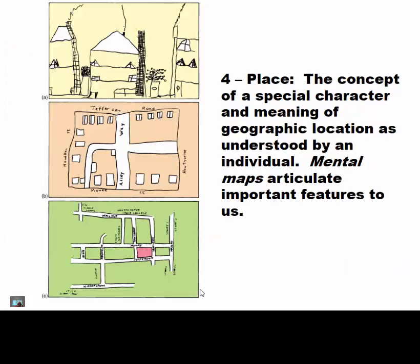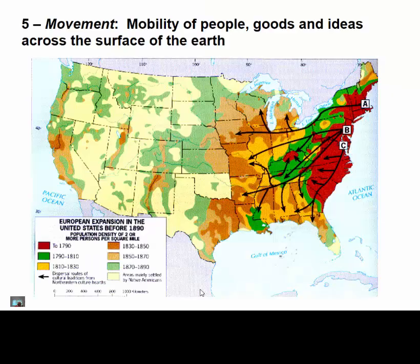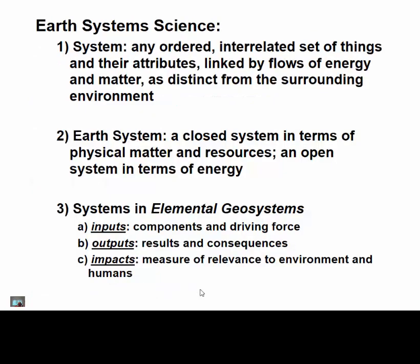Place refers to how we interpret the space around us. How do I give directions? I don't say latitude and longitude — I say look for the McDonald's and take a right there. Mental maps help us do that. And then movement refers to the mobility of people, goods, and ideas across the surface of the earth.